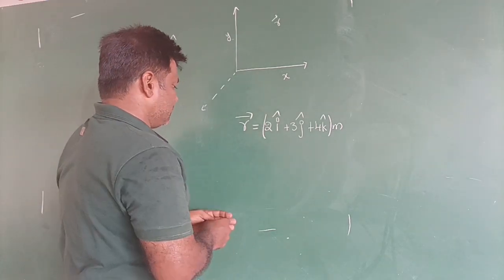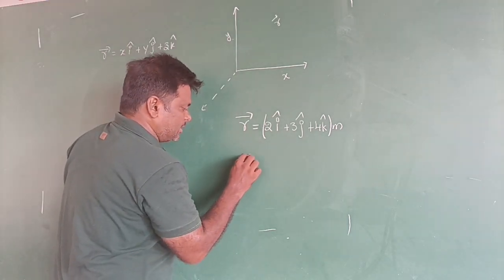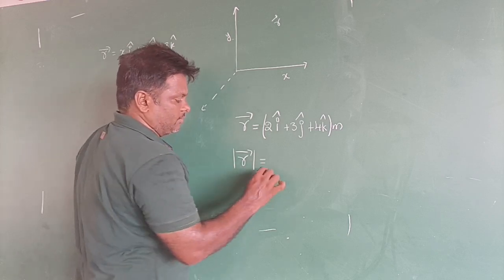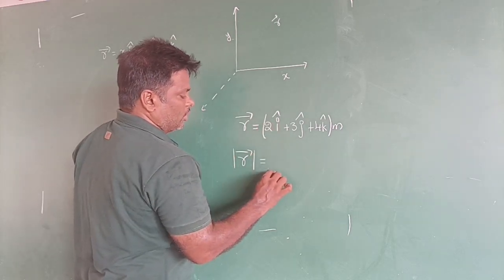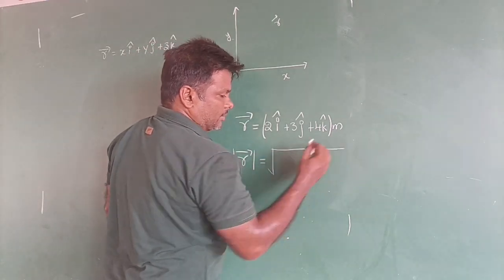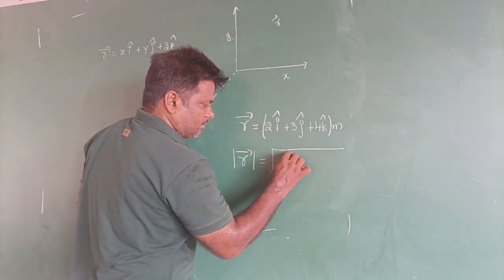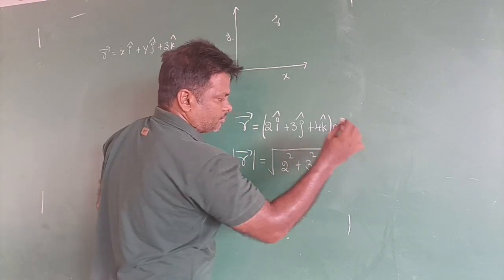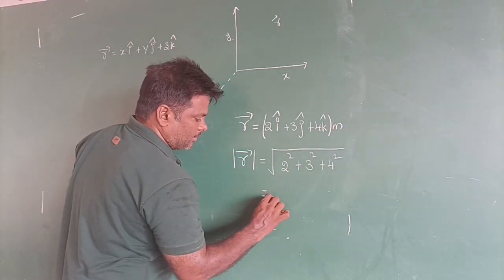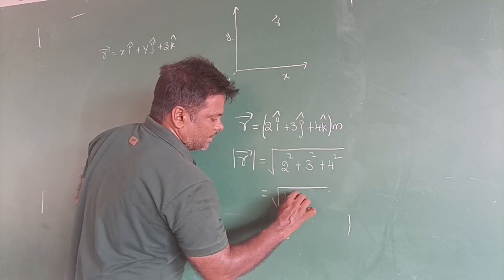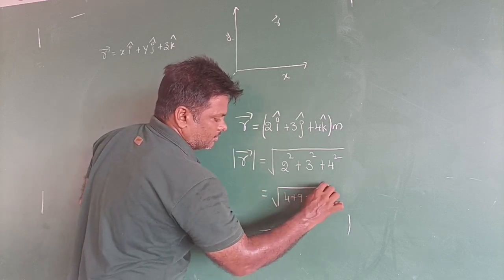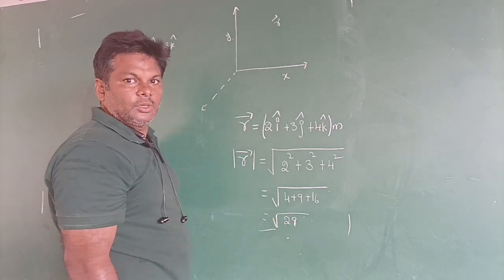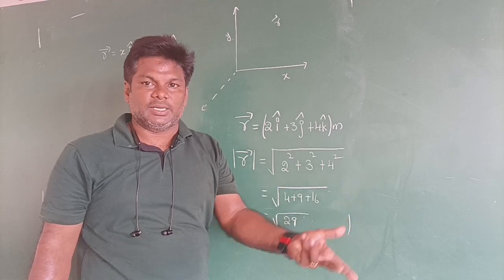What is the distance or displacement between this location and the origin — the direct path — that is nothing but the magnitude of r̄. How to get it? That is equal to root over (i coefficient squared plus j coefficient squared plus k coefficient squared), so 4 plus 9 plus 16, which is equal to √29 meters.